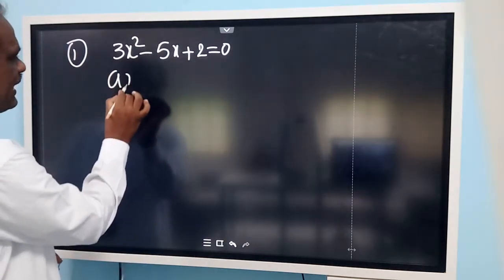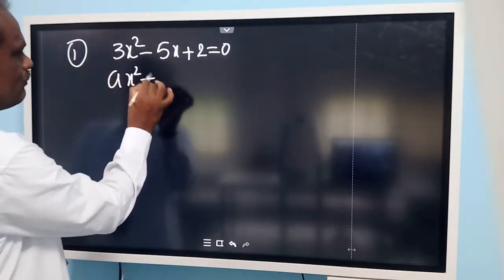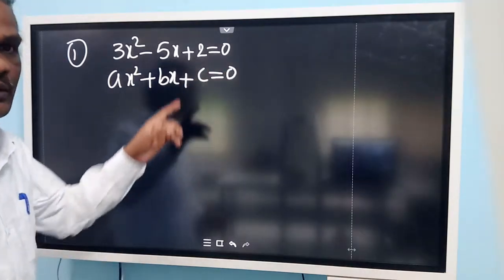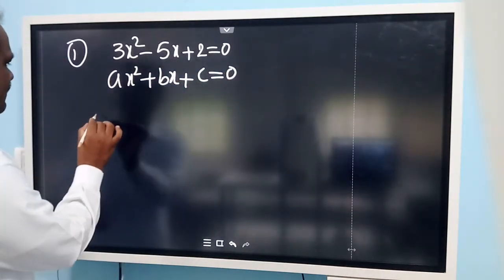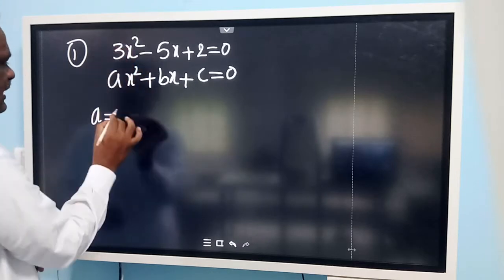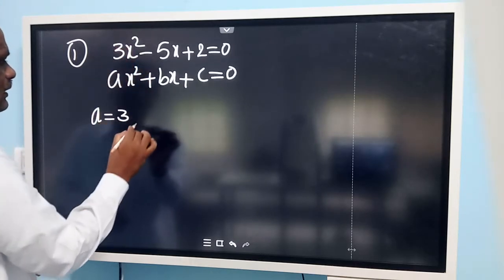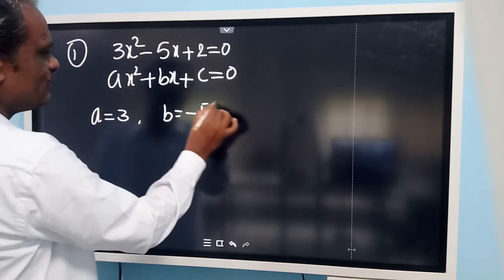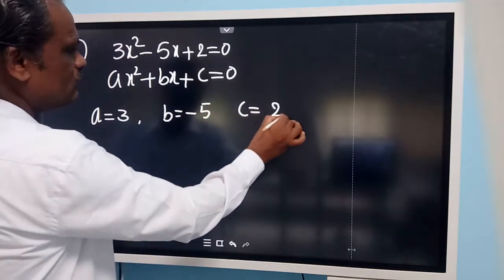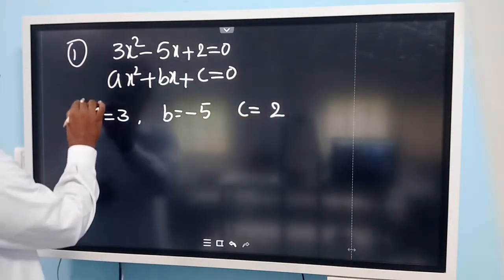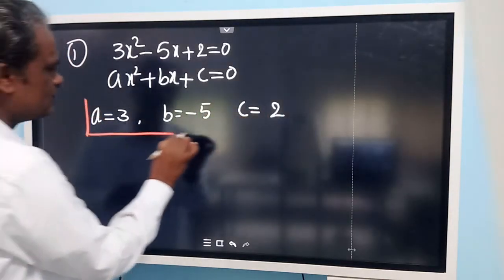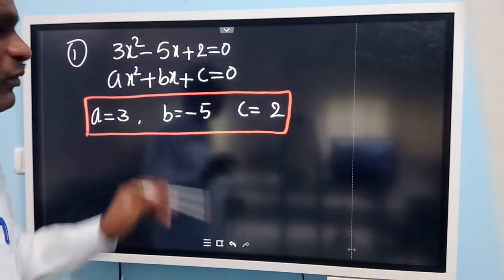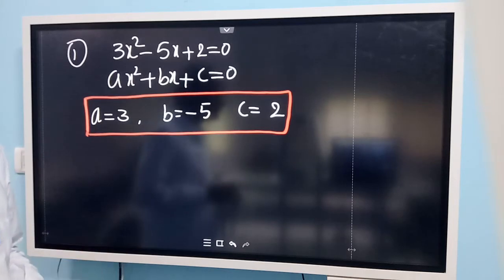Compare with the standard form: ax squared plus bx plus c is equal to 0. Comparing with this, we can find out the values: a is equal to 3, b is equal to minus 5, and c is equal to 2. So these are the values of a, b, and c.